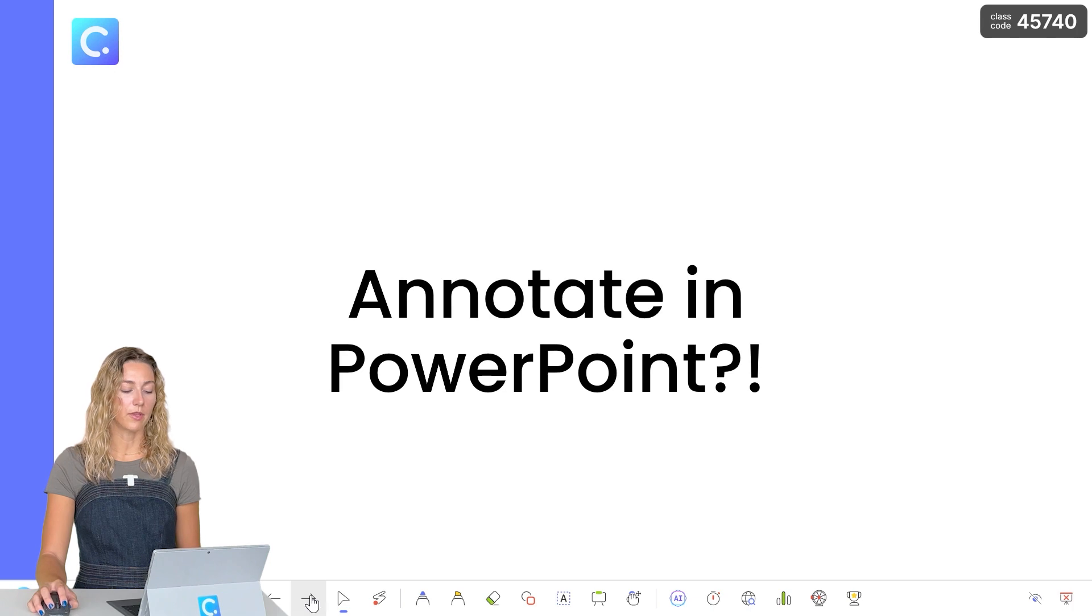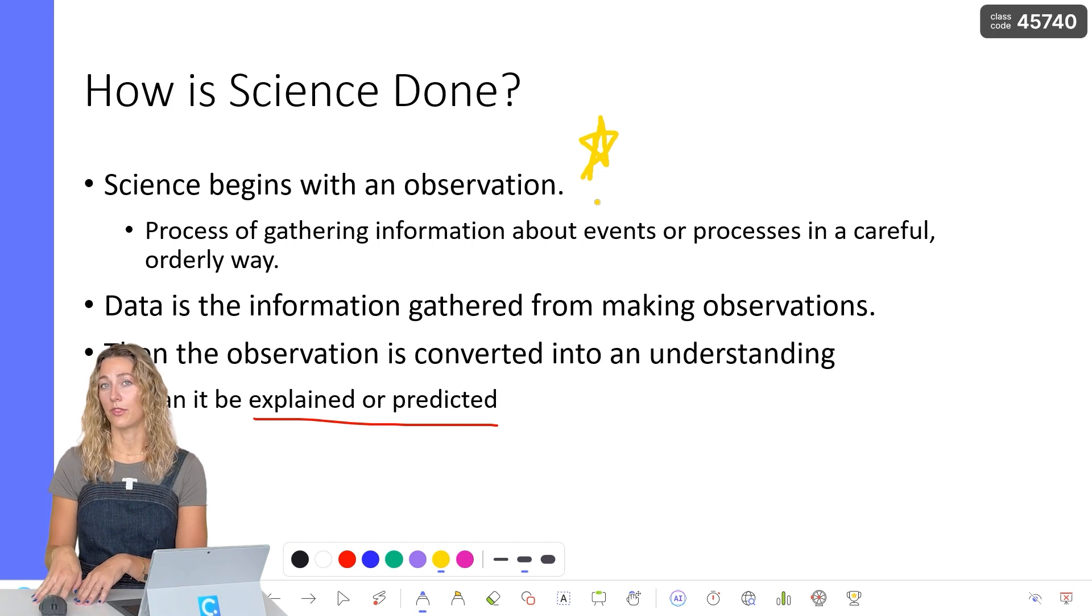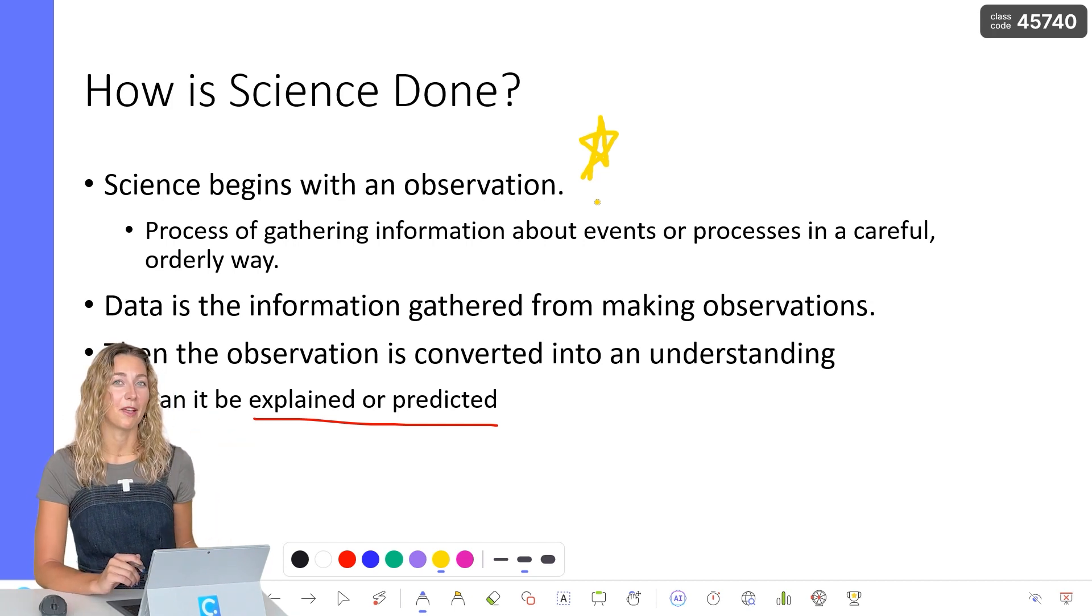We can get started straight away with annotating with our pen tools. Along with the different color options, you can also change the thickness of your pen. That way you can annotate exactly how you would like. If you do find it a little bit difficult annotating with your mouse, you can use a graphic tablet or a touch screen device and your pen. If you want to learn more about using a graphic tablet with PowerPoint, you can take a look at the video linked up above.